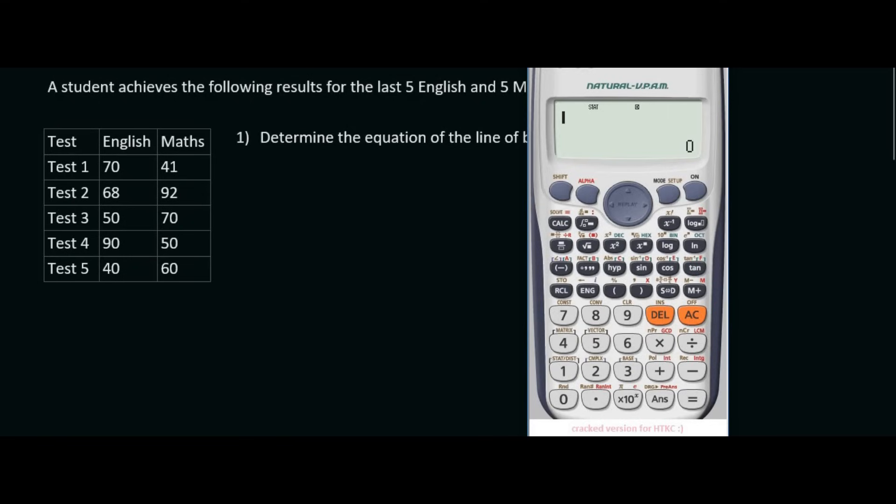So rather what you want to do is go to on, then say shift stat. You want to go to number 5 which is regression and then you get your a and b values like that.